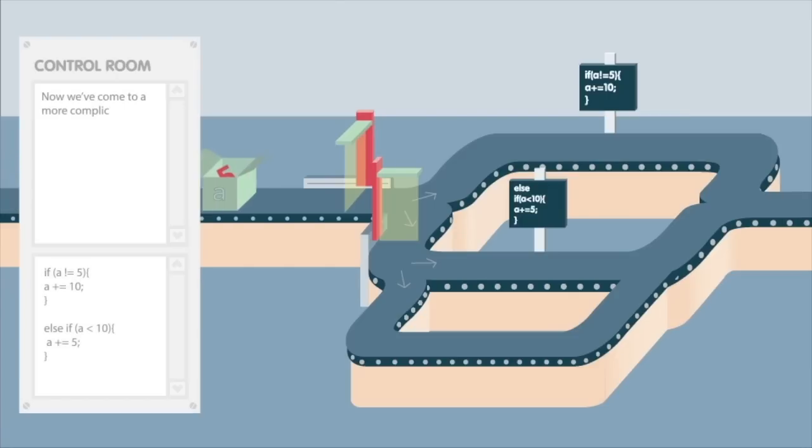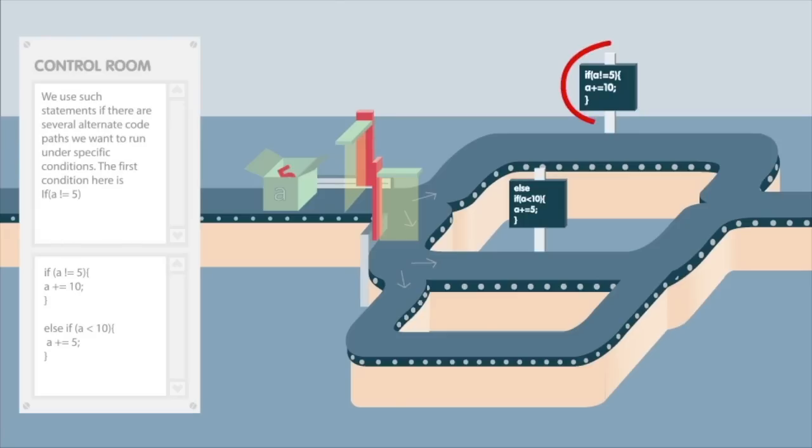Now we've come to a more complicated fork in our path. This looks like an if-else-if statement. We use such statements if there are several alternate code paths we want to run under specific conditions. The first condition here is if A is not equal to 5. If this condition is true, we are sent through the top path as normal. But if it is false, rather than just taking another path, we are sent through to the next condition check.